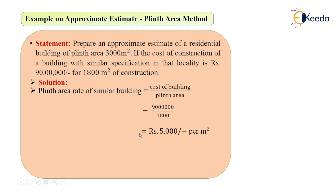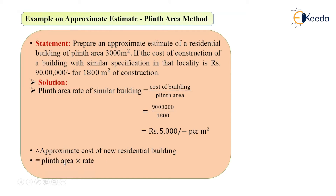So the plinth area rate of the existing building came as Rs 5000 per meter square. Now let's calculate the approximate cost of the new residential building. The plinth area given is 3000 meter square. Using the formula — plinth area multiplied by rate — that is 3000 into 5000, which gives a value of Rs 1 crore 50 lakh.